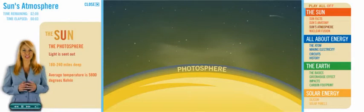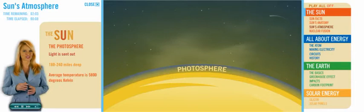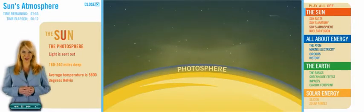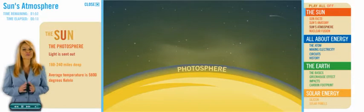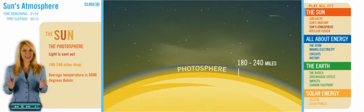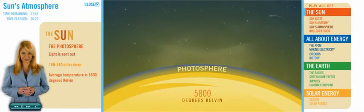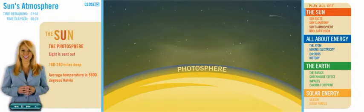The first layer of the atmosphere is called the photosphere. It's a very thin layer compared to the rest of the Sun, but it's the only part of the Sun that we can see from Earth. The photosphere is where the light is sent out. It's anywhere from 180 to 240 miles deep, and averages 5,800 degrees Kelvin, a far cry from the heat of the Sun's interior.